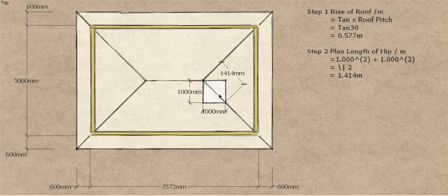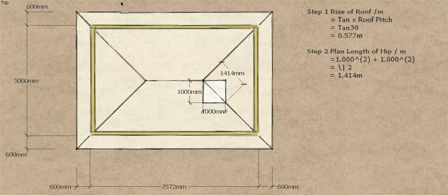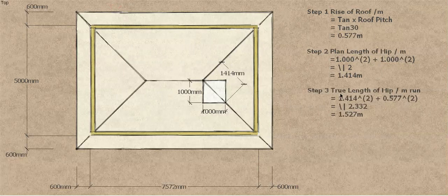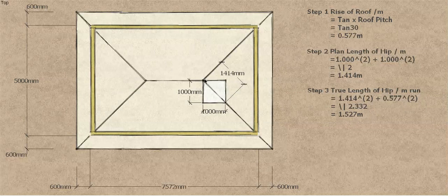So now we know that our hip, for every meter along the half span, rises 0.577m and runs 1.414m on plan. Now we can do Pythagoras again with those two dimensions. The true length of the hip per meter is: √(1.414² + 0.577²), which gives a length of 1.527 meters. So for every meter of half span, the hip travels 1.527 meters — and that's a constant for any 30-degree pitch roof.